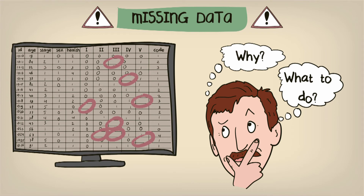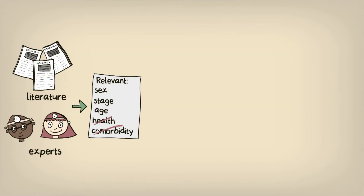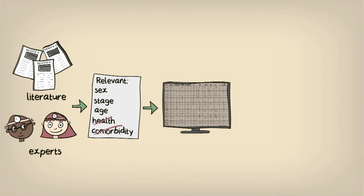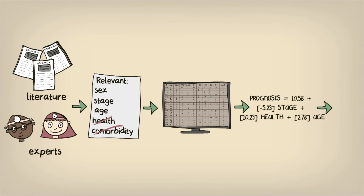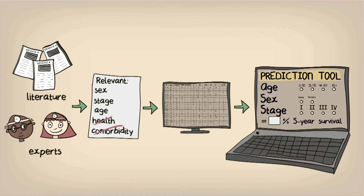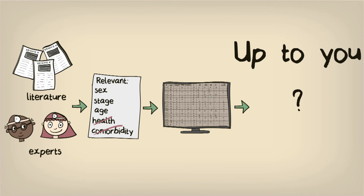Now, let us assume that we have decided on the appropriate analytical approach, we have appropriately handled missing data, and we have fitted a regression model to our data. In general, you will end up with a set of regression coefficients, and these will act as the basis of our prediction rule. For example, you could choose to simplify the model by rounding the coefficients to whole numbers to create a ready-to-use rule, or create tools such as nomograms, web calculators, or even apps. It is ultimately up to you how you want to present your prediction model, as long as it can be used readily in practice.